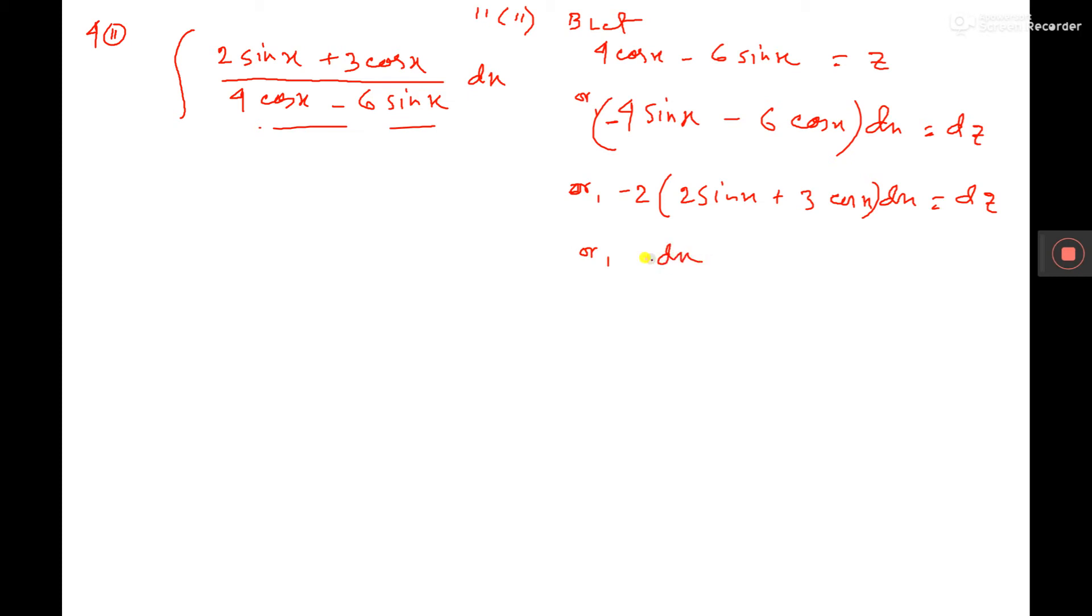So, you are getting dx, sorry, 2 sin x 3 cos x dx, that is equal to dz by minus 2.